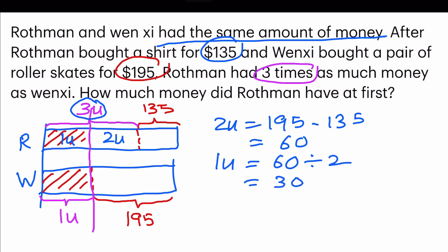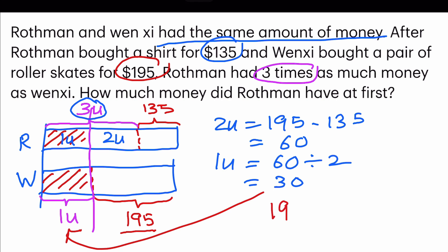Now the last step — how much money did Rothman have at first? Well, Rothman and Wensi had the same portion, so I can use Wensi's portion, which is one unit here, and do an addition of $195. I will be able to find out the money that they had at first. So $195 plus $30 gives us $225. And that's it.